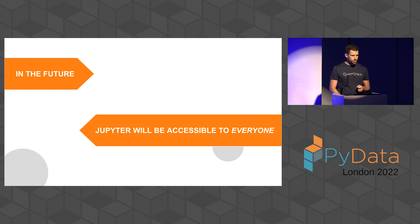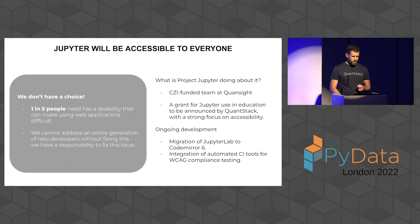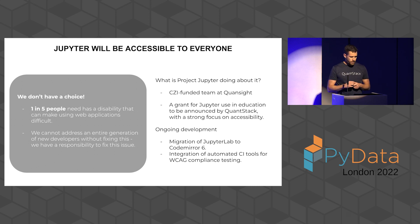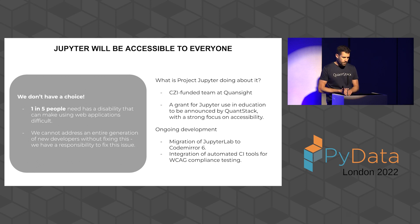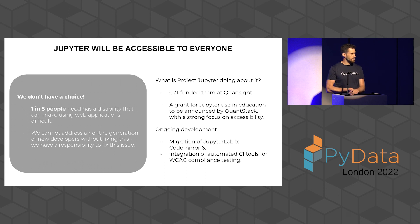In the future, Jupyter will be accessible to everyone. One in five people has a disability that can make using web applications difficult, and we really don't have a choice — we cannot address an entire generation of new developers and students without fixing that. There is a CZI-funded team at Quantstack, and we're also working on a grant for Jupyter in education with a strong focus on accessibility. We are migrating JupyterLab to CodeMirror 6, which brings performance improvements and makes critical steps towards making Jupyter accessible.